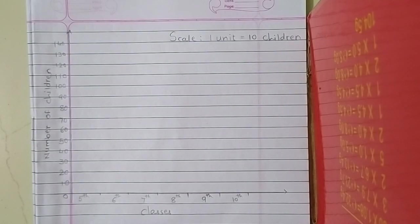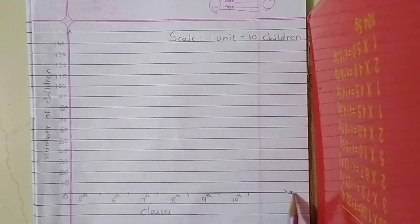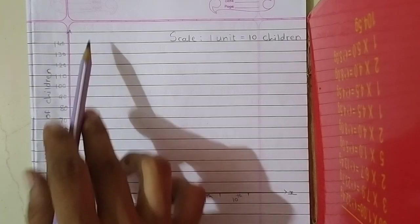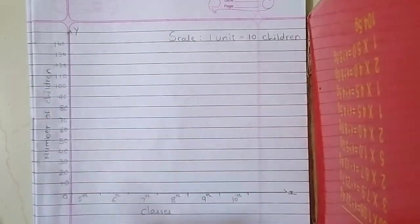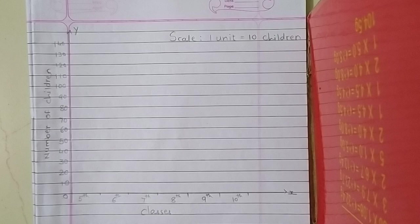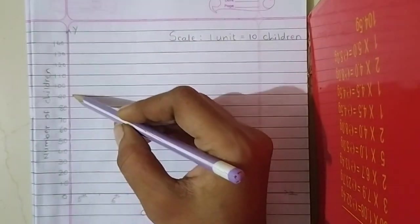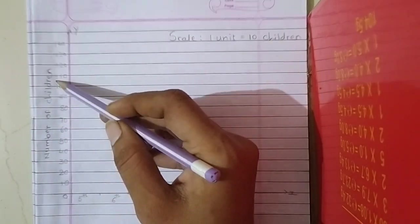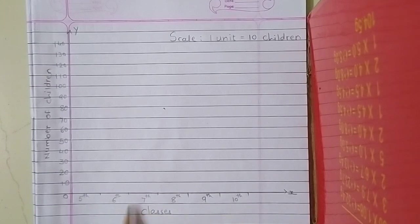Now look at here. In the first, you have to draw a bar graph. So first of all students, look at here. In this way you have to draw horizontal line, x-axis. It is vertical line, y-axis. Here write down the numerical information: number of children. Here the other information: classes 5th, 6th, 7th, 8th, 9th and 10th.